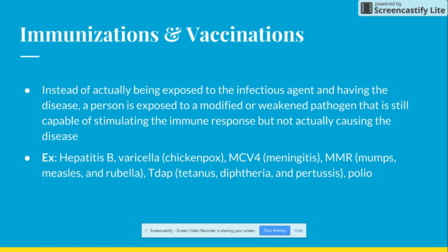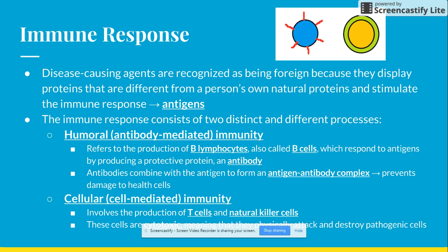Different vaccines are required for you to be enrolled in school. These include the Hepatitis B vaccine, the varicella (chickenpox) vaccine, MCV4 for meningitis, MMR for mumps, measles, and rubella, TDaP for tetanus, diphtheria, and pertussis, and the polio vaccine. There are other vaccines such as HPV that are not required but work the same way — giving you a modified or weakened version of the pathogen so your body can fight it more efficiently.